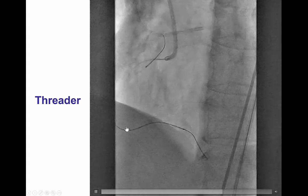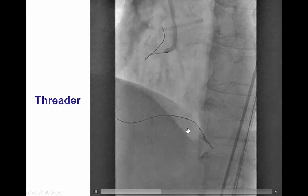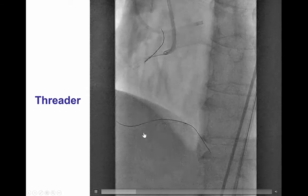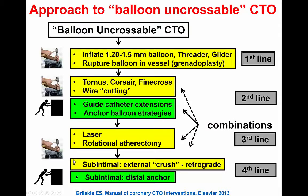We had a lot of difficulty advancing equipment past that area, requiring multiple maneuvers. Finally, a Threader microcatheter was able to be advanced around and dilate that area. This is an example of a balloon uncrossable CTO — we have sub-intimal crossing but cannot advance equipment through it. There is a systematic approach starting with small balloons and the Threader microcatheter, escalating to more aggressive maneuvers including various microcatheters, support strategies, side branch anchor balloon, laser, and sub-intimal techniques.